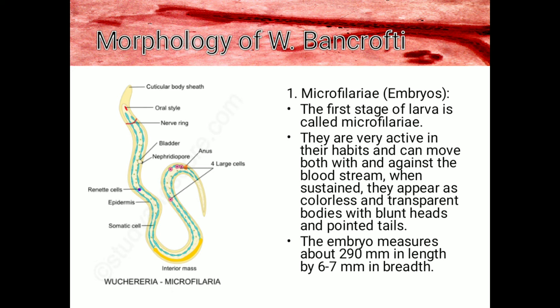Let's talk first about the morphology of W. bancrofti. We have the microfilariae, or the embryo — this is the first stage of larva. They are very active in their habits and can move both with and against the bloodstream. When stained, they appear as colorless and transparent bodies with blunt heads and pointed tails. The microfilariae measure about 290 mm in length by 67 mm in breadth.